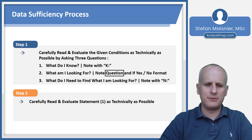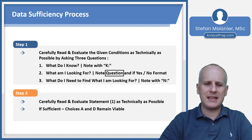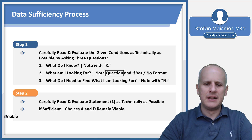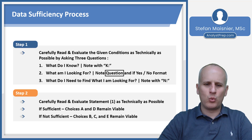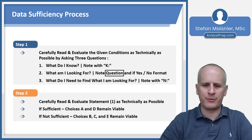Step two is to carefully read and evaluate statement one on its own alone as technically as possible. If statement one alone is sufficient, the only viable choices remaining are A and D. But if statement one alone is not sufficient, then you have A and D eliminated — because that's the one and the each in our 1, 2, 10 — and choices B, C, and E are the only ones that remain viable.